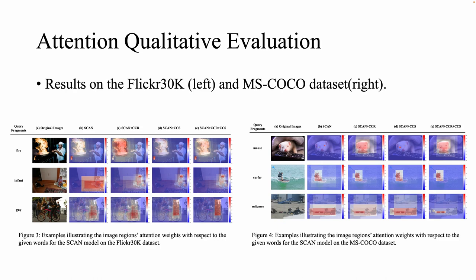We also visualize the attention weights. In the examples of fire and mouse, SCAN fails to assign large attention weights to most regions containing fire or mouse. By contrast, CCR mitigates this issue. CCS is less effective in these cases.